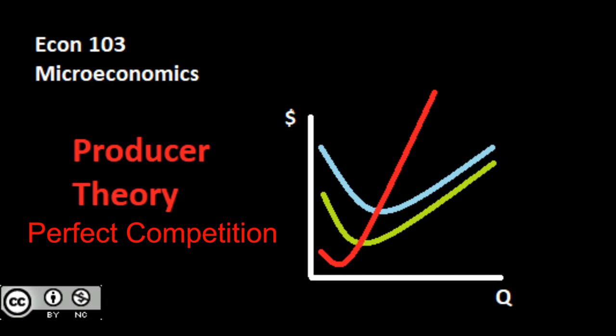In the second video, we pulled all this forward to our costs. We took a look at a representative perfectly competitive firm - we have our cost structure, we overlay the price onto it, and we worked out positive, zero, and negative profit.